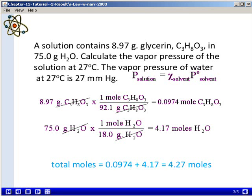Once we have the number of moles of glycerin and the number of moles of water, we will add these two numbers together to give us the total number of moles present in the solution. This is a value of 4.27 moles.